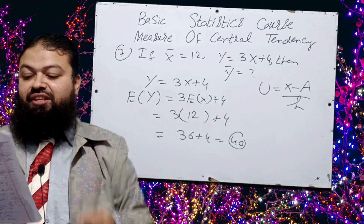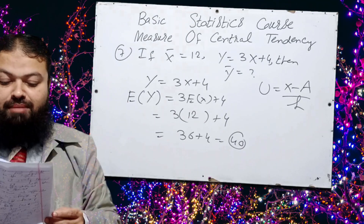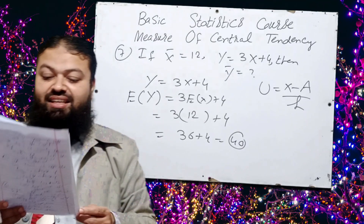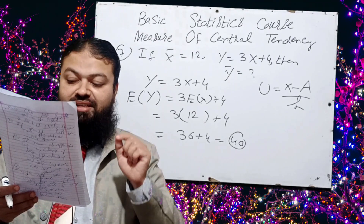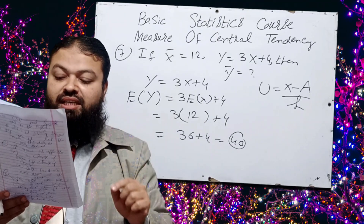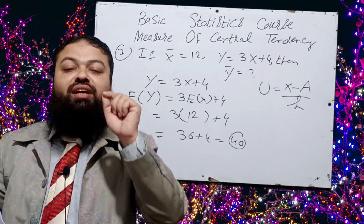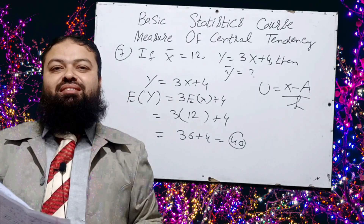Question number nine: in a symmetrical distribution, mean, median, and mode are always equal.